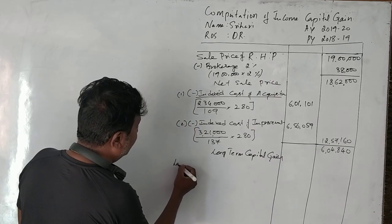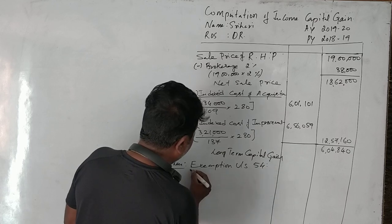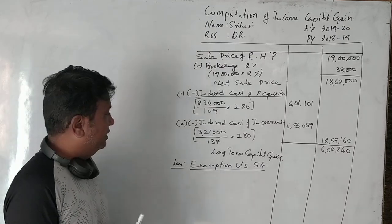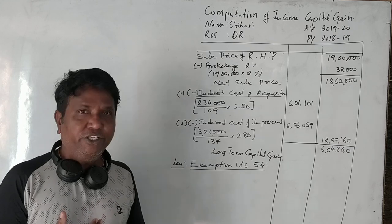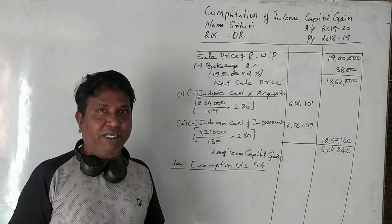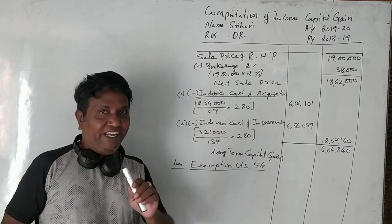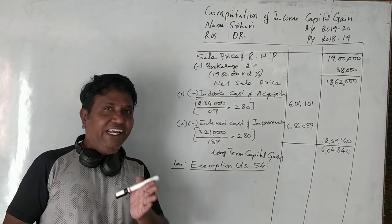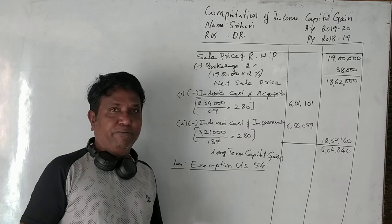Now we have to give exemption under Section 54. Section 54 says that if an individual sells his old residential house property and purchases a new residential house property within one year before or after the date of sale, he is eligible to get exemption under Section 54.